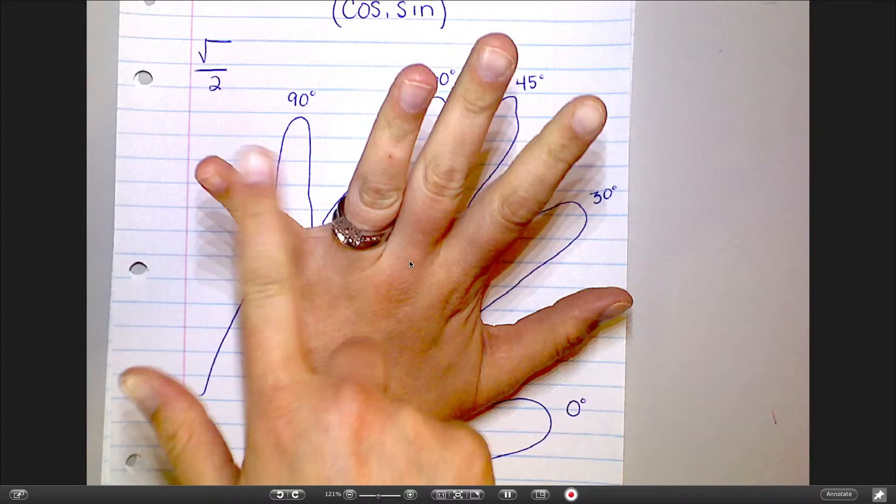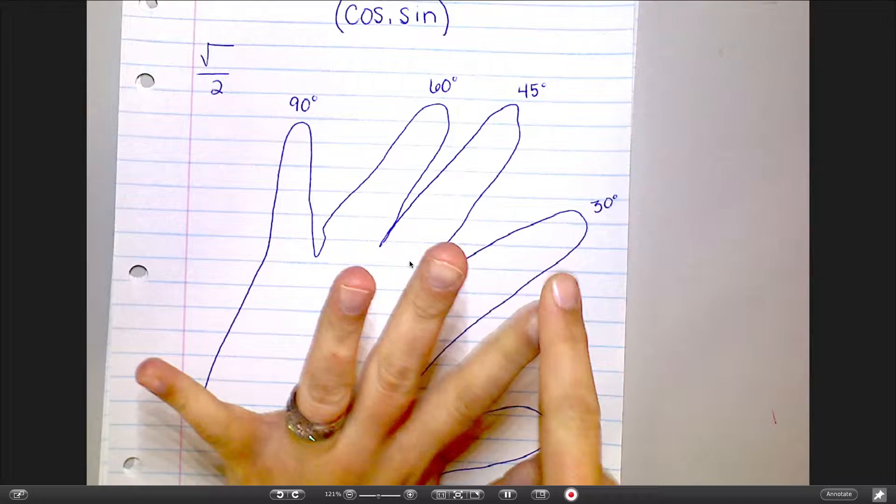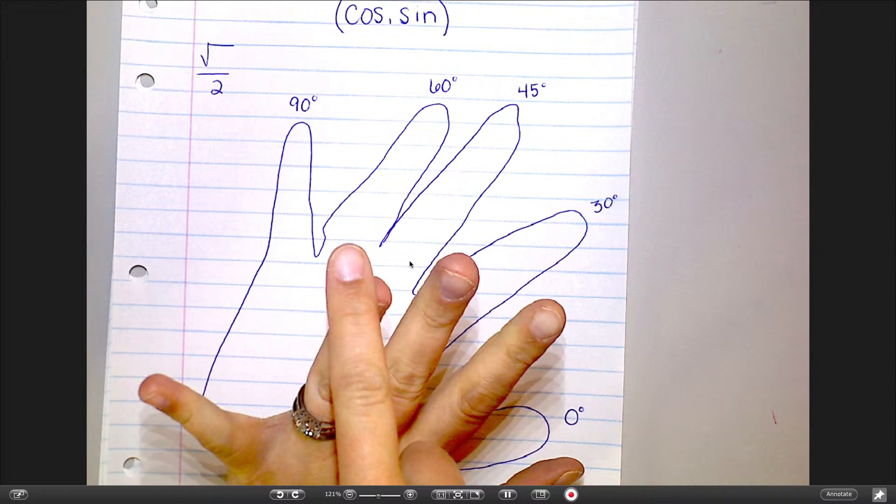So, there's like your right angle, 0 to 90, and then your 30. My fingers are the 30, 45, and 60.